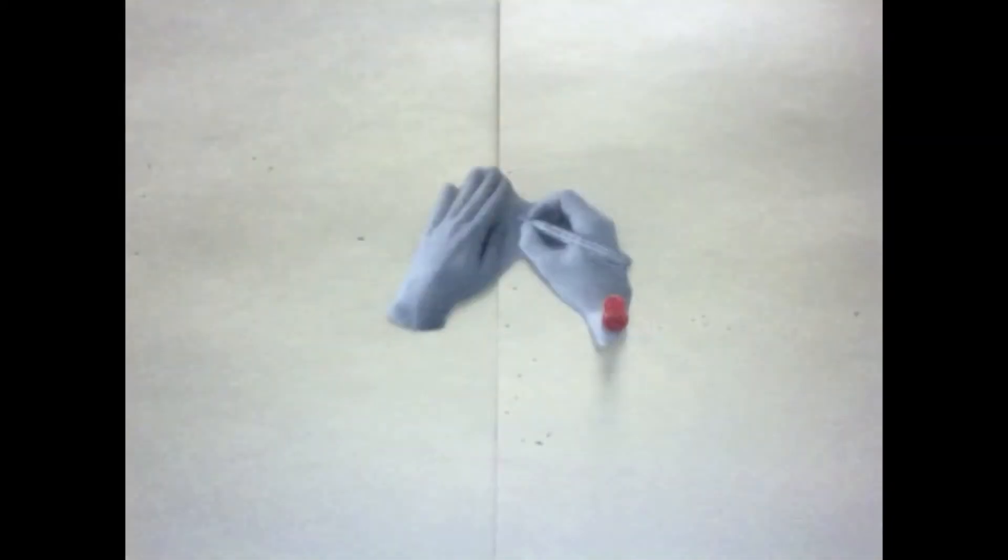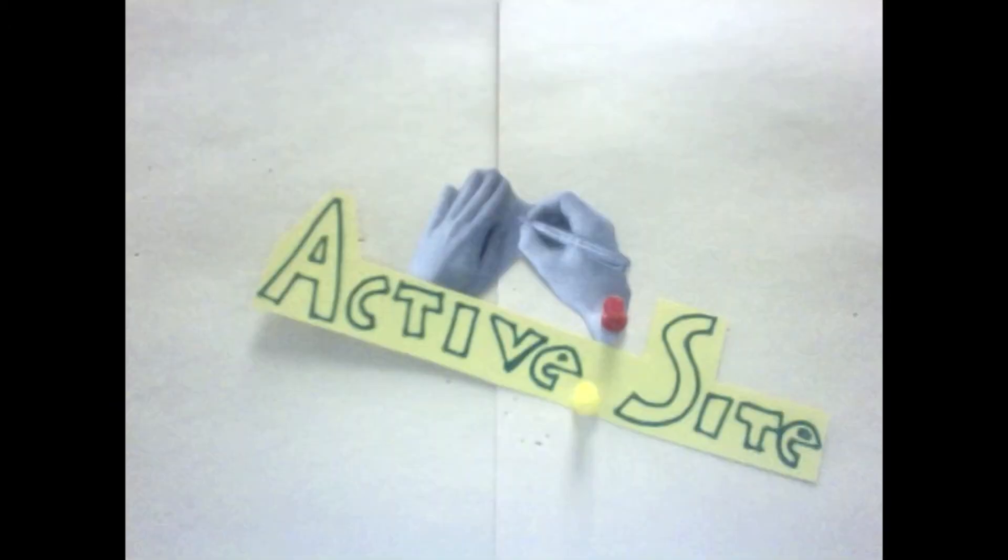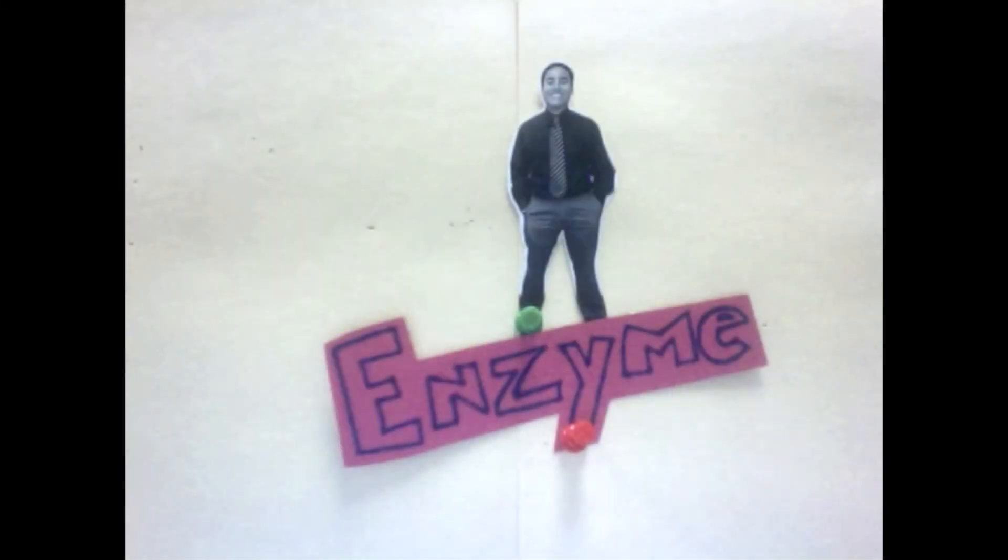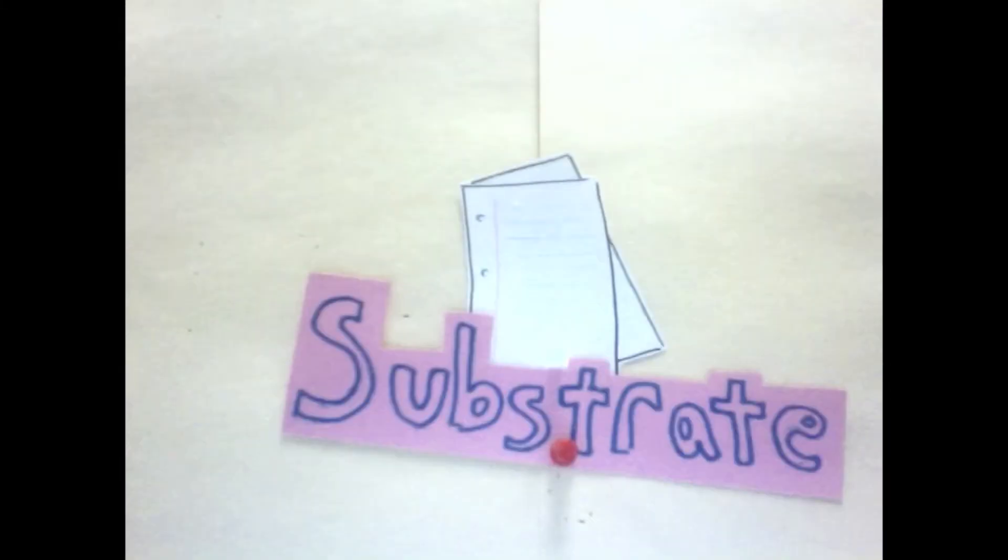Enzymes bind to the reactant they are working on. The reactant is called the enzyme substrate. During this binding, the substrate is attached to the enzyme's active site. This relationship that is formed is referred to as the enzyme-substrate complex. The substrate stays attached to the active site until it is modified by the enzyme into the product.